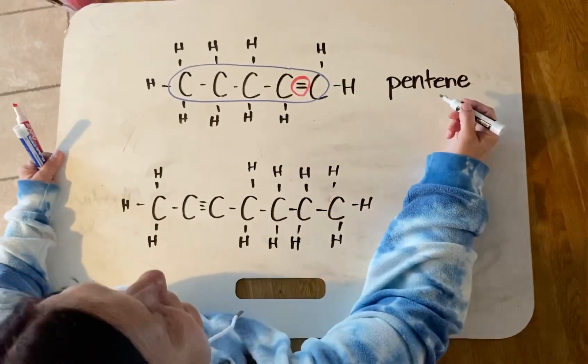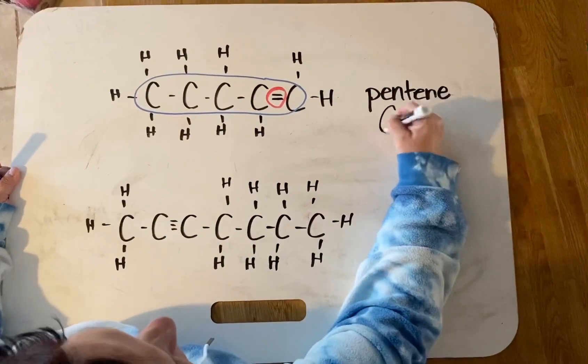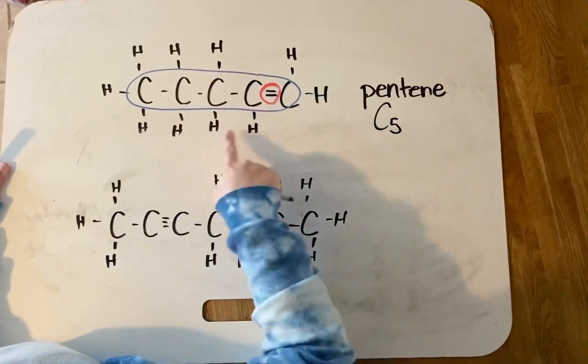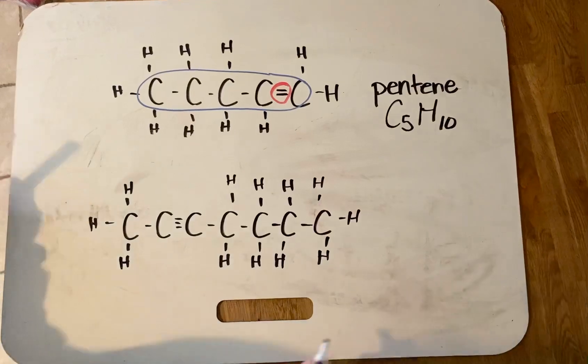If I want the formula, I could either use the formula from table Q or I could simply count: one, two, three, four, five carbons, and then one through ten hydrogens. C5H10 does match the alkene formula.